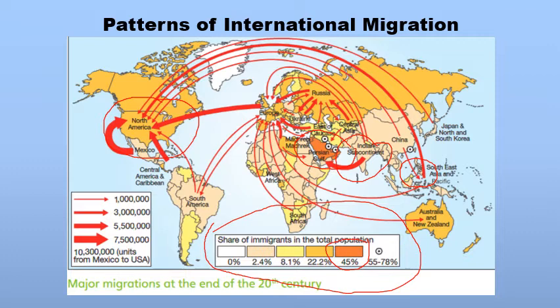The next key tells you that 55 to 78% of the population in some countries are outside workers who have migrated in. Examples include Kuwait, Qatar, Bahrain, UAE, and Hong Kong. Basically, these are areas where migrants outnumber the local population — migrants are more than the people who originally belong to that area — because of the abundance of work opportunities.